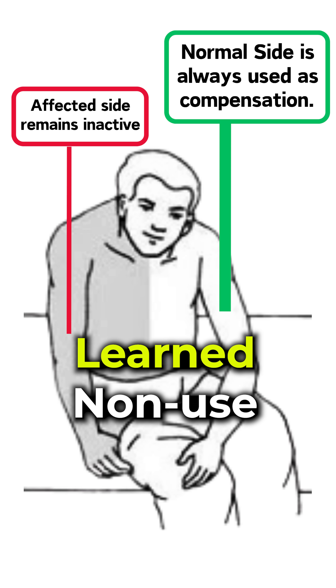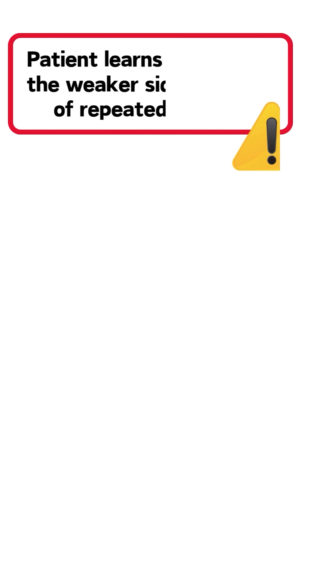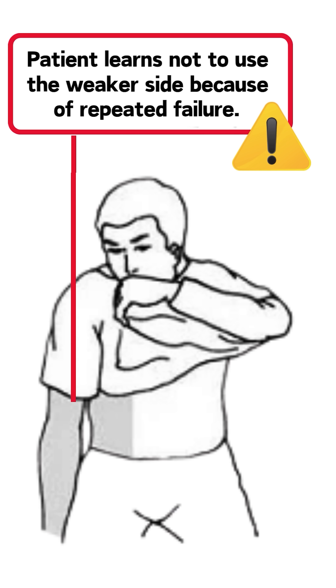That is, the patient learns over the initial period following stroke not to use the weaker side upper limb, because of the repeated failure and frustration.